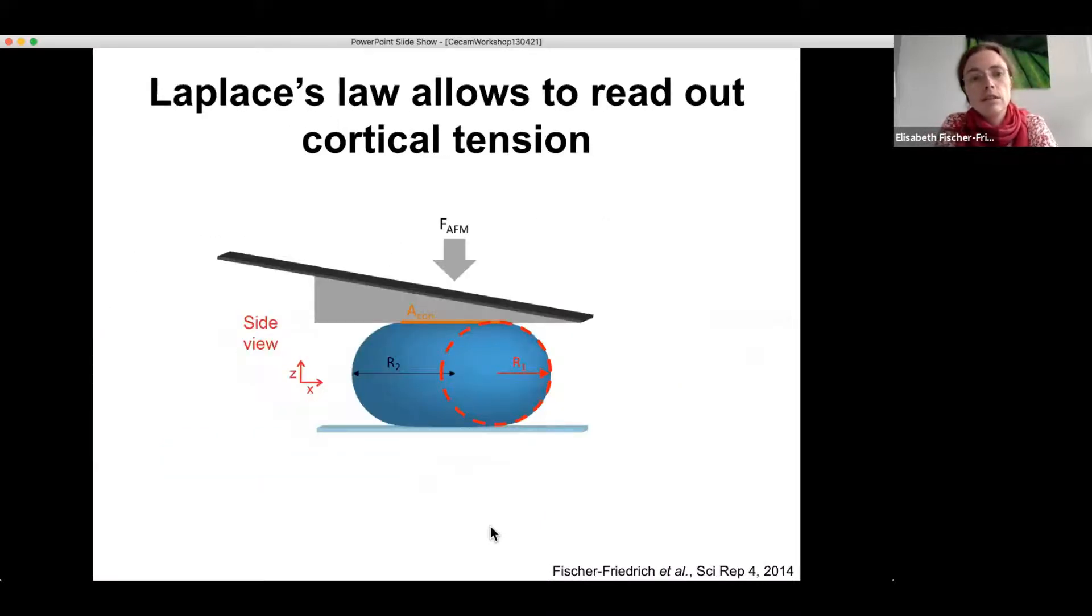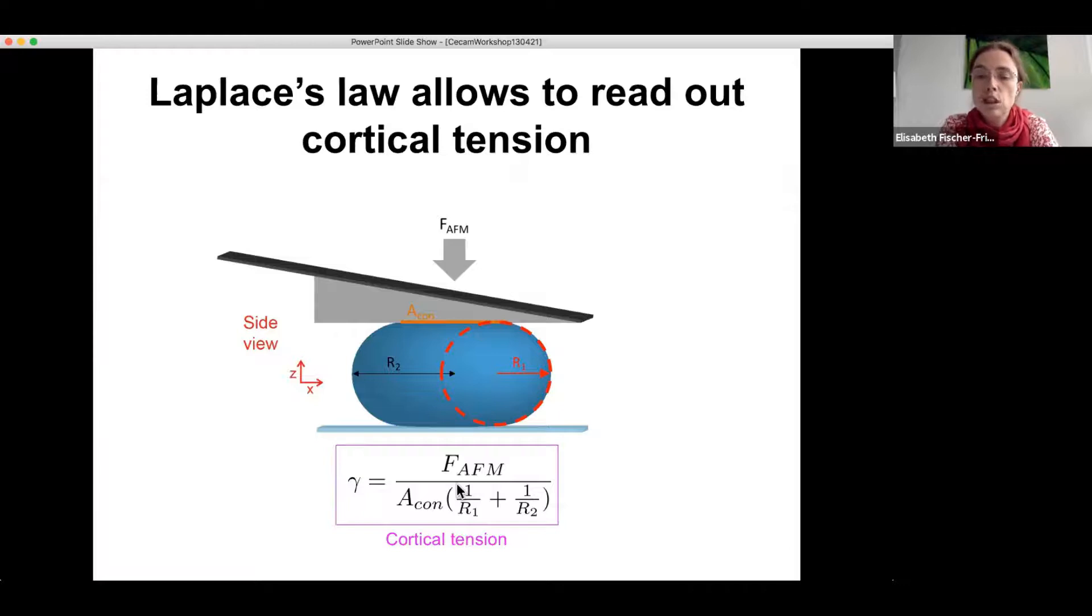So Laplace's law, as already mentioned before, can again now be applied to read out cortical tension in this assay. It looks a little bit different now because we do not have a spherical shape, but a shape with two different kinds of principal curvatures. So overall cortical tension is given as the force readout by the AFM divided by the contact area, so this is the contact area between wedge and cell, times this geometrical factor here which is just the sum of the two principal curvatures.